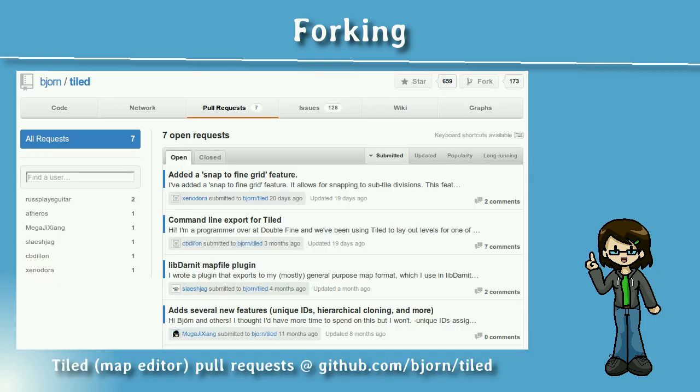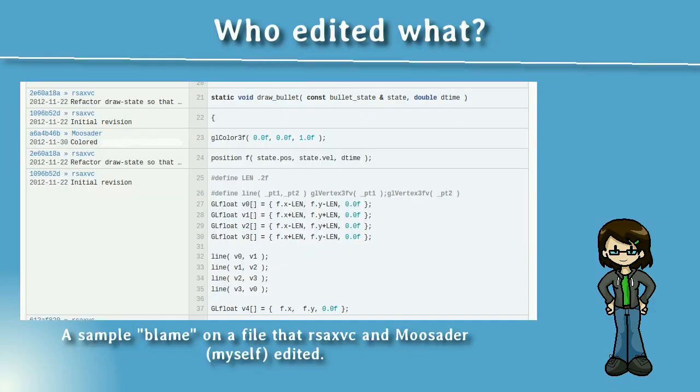If you make a fork of someone else's project, some source hosting websites will allow you to make a pull request. This means that your feature changes will show up under the original repository's pull request list. Therefore, when someone is using the original project, they can look at the pull request list and choose additional features for that project. When you commit your changes to your repo, the source control system automatically keeps track of who changed what. In Git, there's this handy little feature called Blame where you can view a source file that lists who updated what line by line.